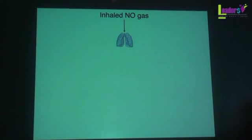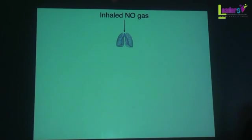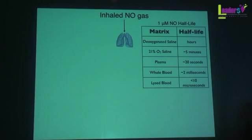Inhaled nitric oxide gas is the go-to therapy in the United States for pulmonary hypertension in the newborn. I understand it's not available here, unfortunately. The idea behind inhaled nitric oxide gas was that it would be selective to the lung — you would get pulmonary vasodilation because that's the vascular bed first hit by the inhaled nitric oxide. And the half-life of nitric oxide is actually very short, so its effects would be restricted to the lung.